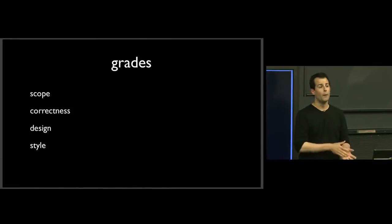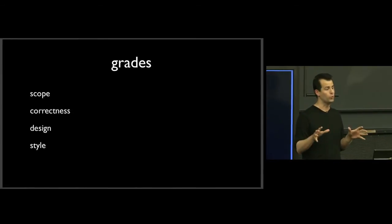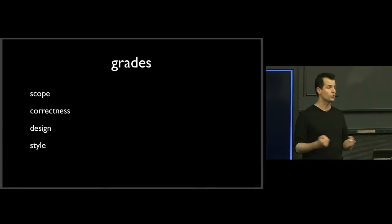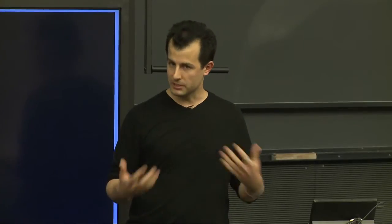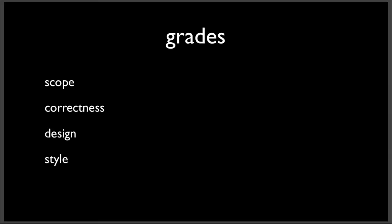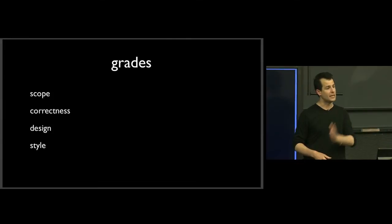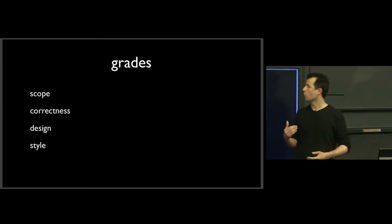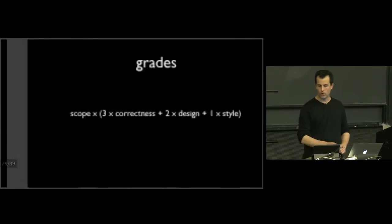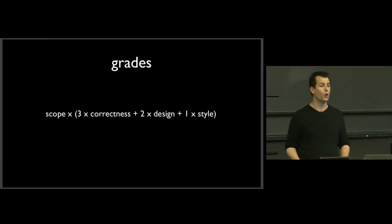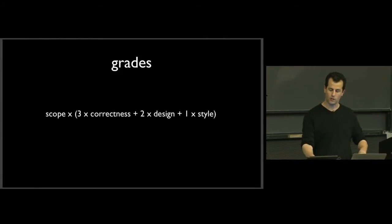Grades in the course are fairly straightforward. Performance will be determined by the projects — no exams, no attendance records, nothing beyond the course's actual workload and immersion. Projects will be evaluated on four axes: scope (the extent to which you tackled the project, did you attempt all features?), correctness (to what extent is it consistent with our expectations?), design (how well designed is it underneath the hood — a more subjective measure), and style (a more aesthetic measure — are variables well named, things nicely indented?). These are weighted roughly in that order, with style weighted the least but still important, and correctness worth the most.